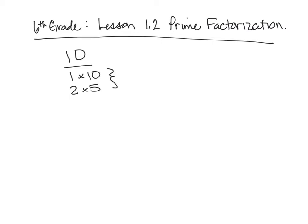These numbers, 1, 2, 5, and 10, are all called the factors of 10. So that's all they mean by factors, numbers that can multiply together to build another number. That's what a factor is.